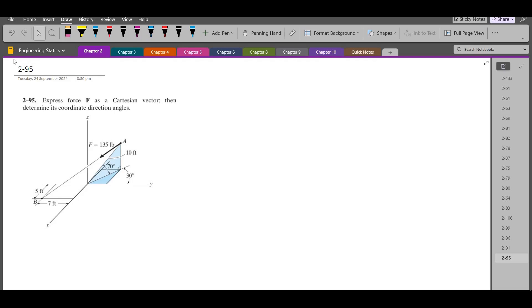Hi, welcome back to the solutions manual. In this video, we will solve the problem 2-95 from R.C. Hibbeler Engineering Statics 14th Edition. According to this problem, we have to express the force F as a Cartesian vector and then determine its coordinate direction angles.